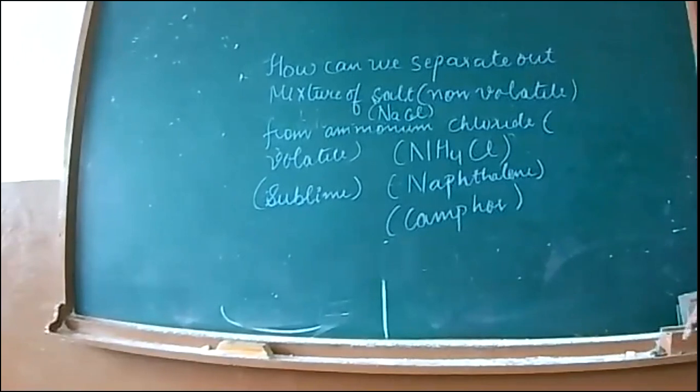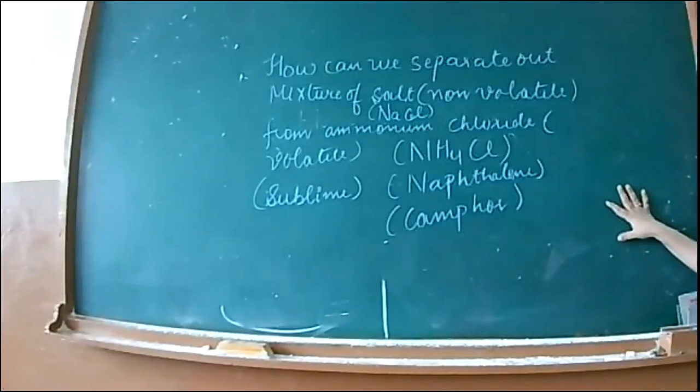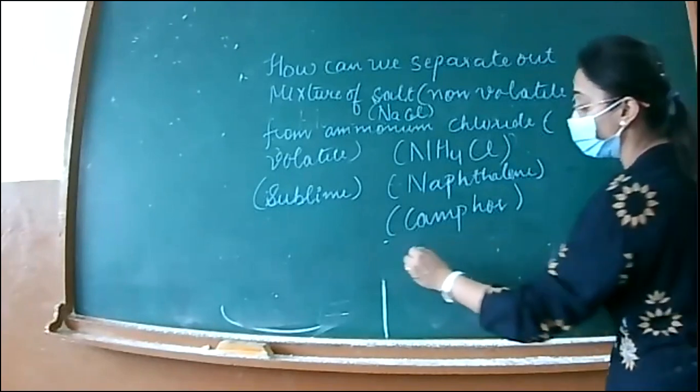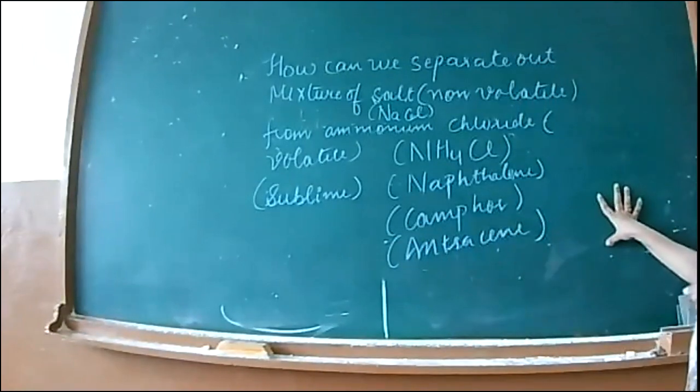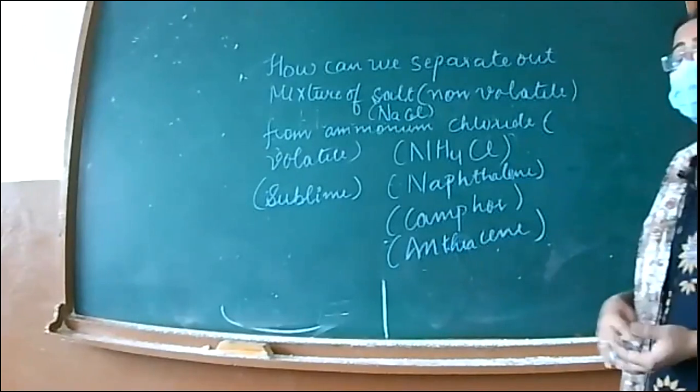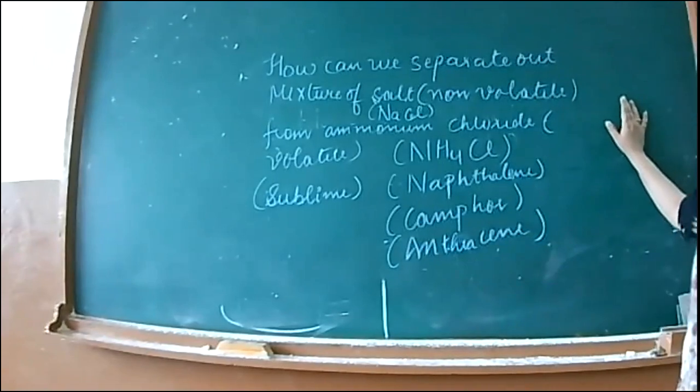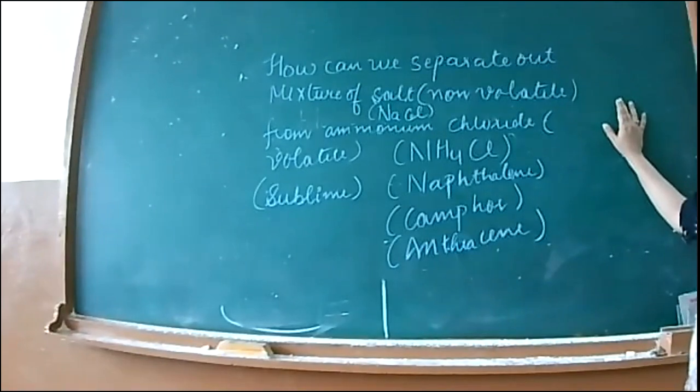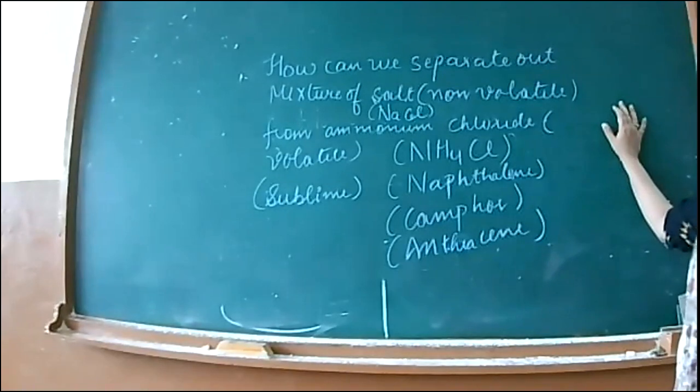Ammonium chloride is a sublime salt. I can also give you naphthalene ball and camphor - these examples are volatile which can sublime. Examples in NCERT are ammonium chloride, naphthalene, camphor, and anthracene. You have this solid mixed with NaCl common salt or KCl or any white salt.